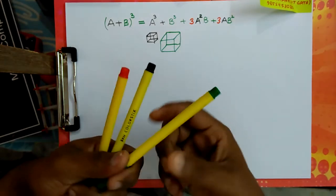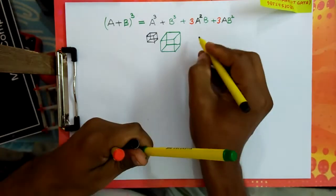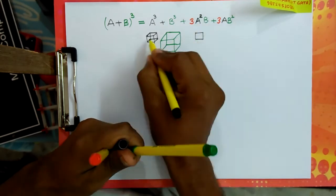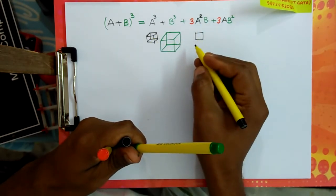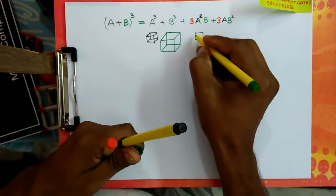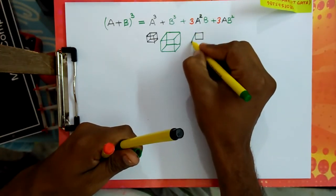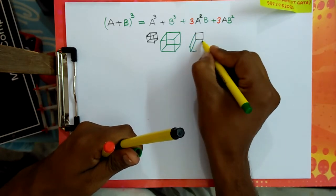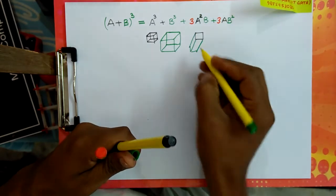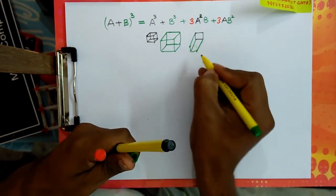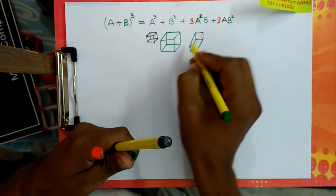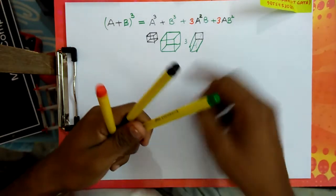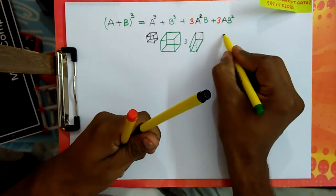And what does '3a squared b' mean? You have a square of size a squared, and then the length is b. So this is an a squared b cuboid, and here are three pieces of this.